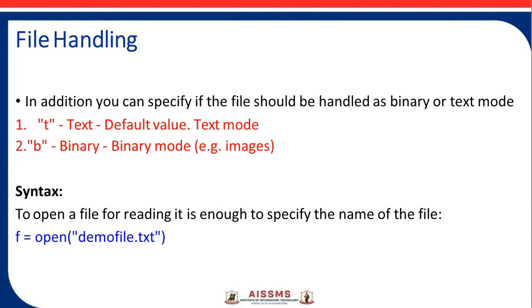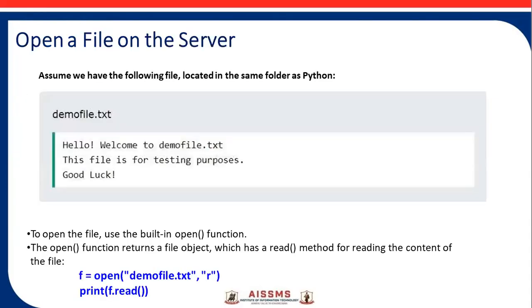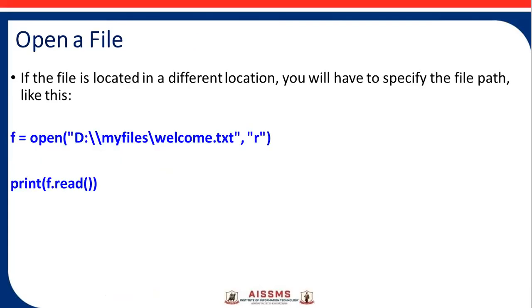To open a file for reading, it is enough to specify the name of the file: f = open('filename.txt'). Assume we have a file called demofile.txt located in the same folder, containing the message: 'Hi, welcome to demofile.txt. This file is for testing purposes. Good luck.' To open the file, use the built-in open() function, which returns a file object with a read method. For example: f = open('demofile.txt', 'r'), then print(f.read()).